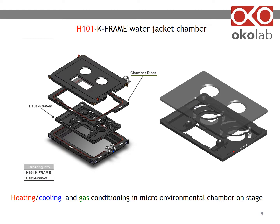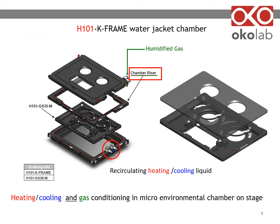Here is an example of a water jacket fitting a K-frame stage with an opening of 160 by 110 millimeters. Connect the tubing for recirculating liquid on its side and the tubing for humidified gas on the fitting located on the lid. The chamber comes with a spacer we call a chamber riser. An insert contains your sample — in this example, the insert holds one slide and two 35 millimeter dishes.